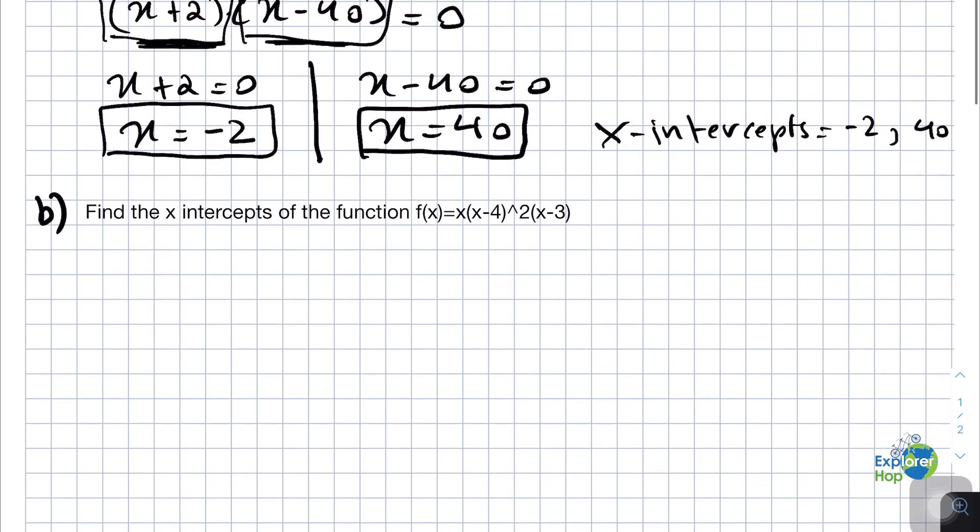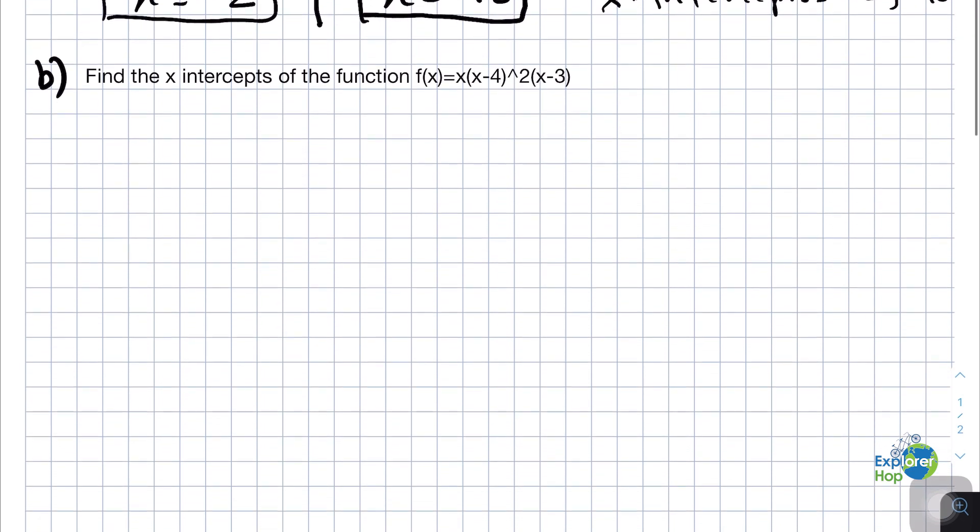Now let's find the x-intercepts of the function f(x) equals x(x-4)²(x-3). This looks a bit complicated, but we always know that whenever we have to find the x-intercepts, we basically put the function equal to 0. So 0 equals x(x-4)²(x-3).